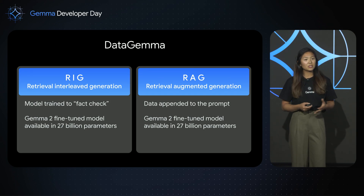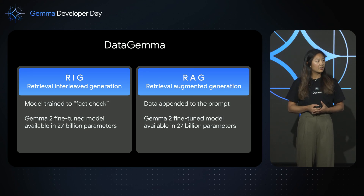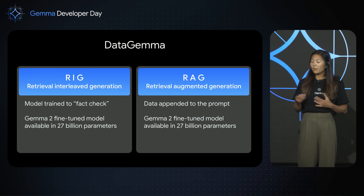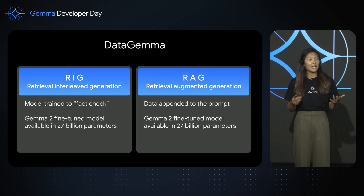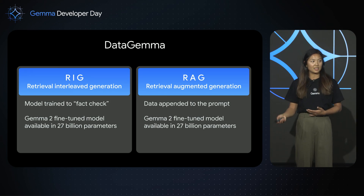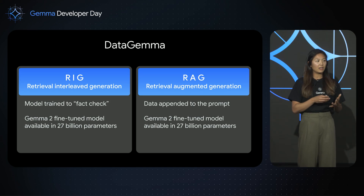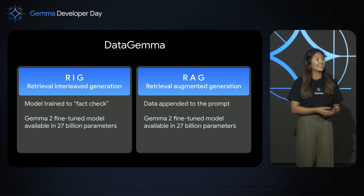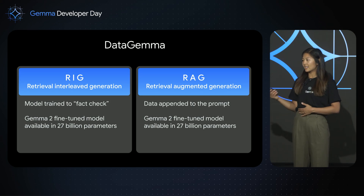We explored two different approaches for doing this. One, which we called Retrieval Interleave Generation, where we trained the model to know when to ask for Data Commons data, and Retrieval Augmented Generation, where we appended Data Commons data along with the user query and passed that to the LLM.